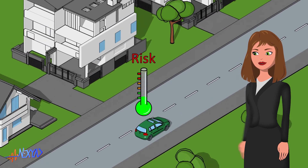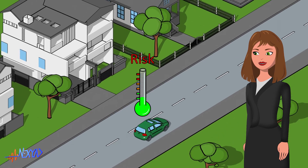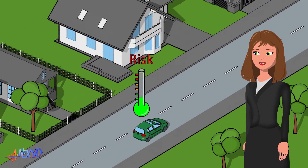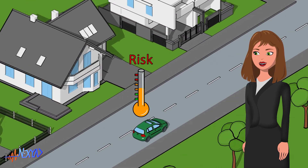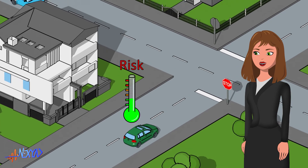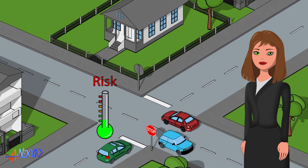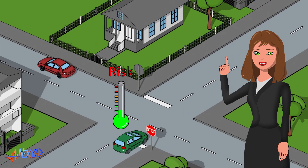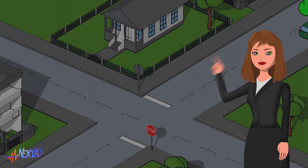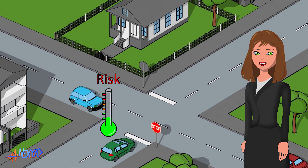Now look at this driver. Driving behaviour is exactly the same here. But when driving risk starts to rise, the car slows down. Driving behaviour is adapted to the road context. This driver is cautious.